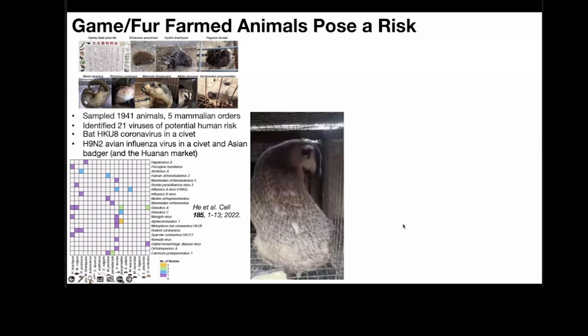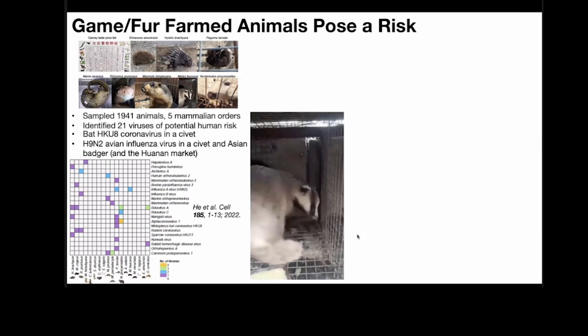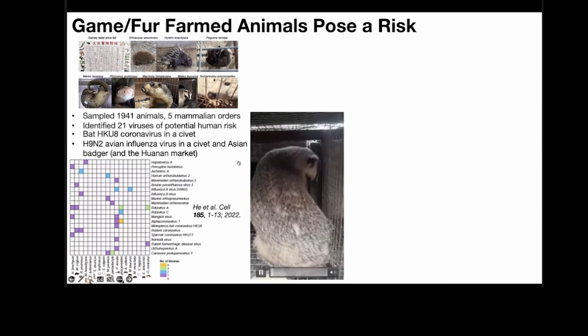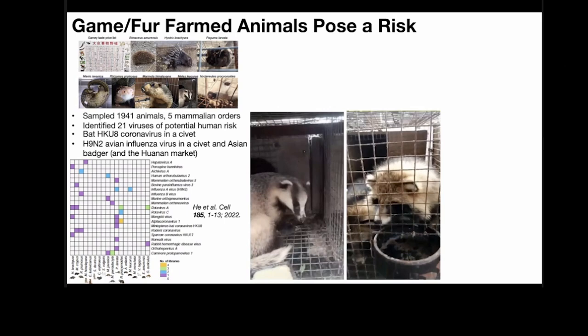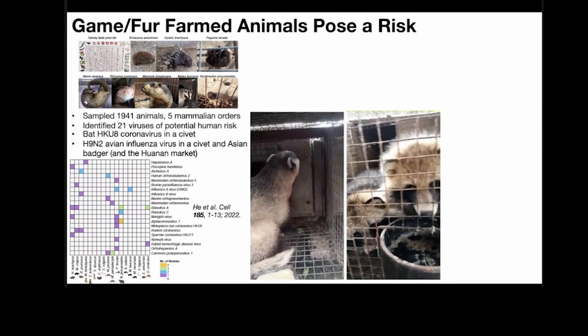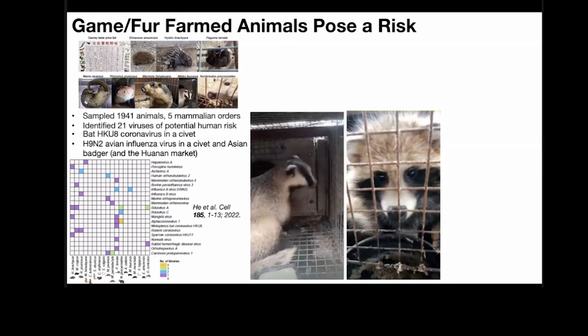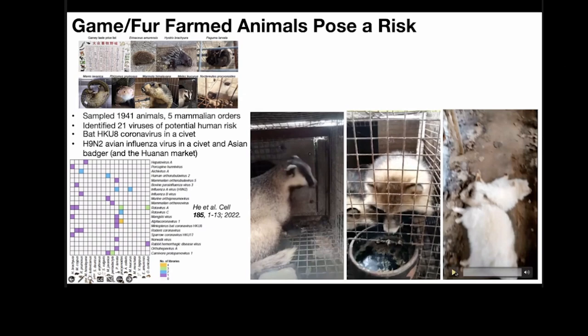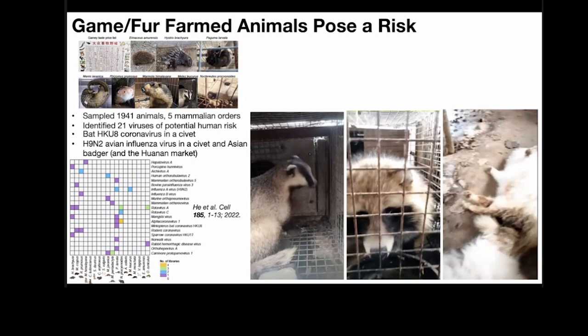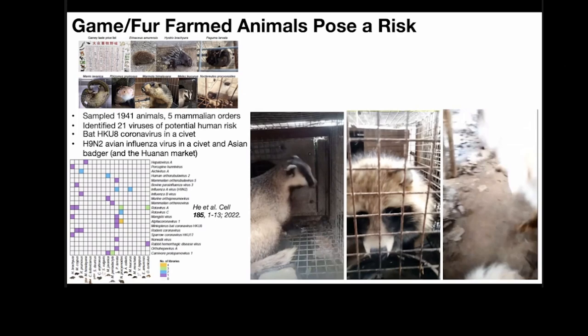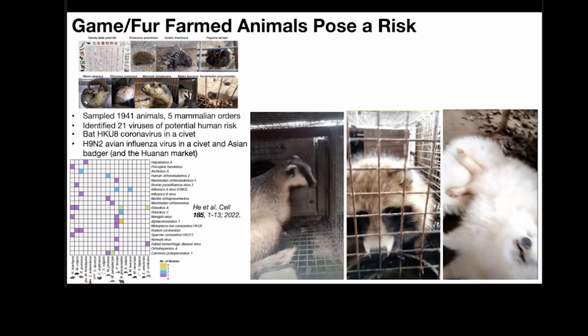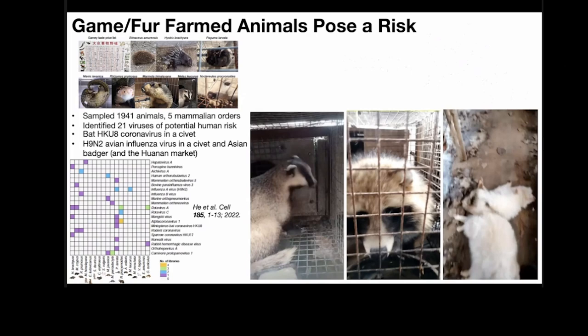These include things like HKU8 coronavirus in a civet, and H9N2 avian flu virus in a civet and a badger. In fact, H9N2 avian flu virus was also in the Huanan market metagenomic samples — so they had avian flu in that market as well. Here's an Asian badger — one of the animals we sampled — and you can see it's clearly unwell: this animal has H9N2 avian flu. And here's a raccoon dog with a cough. Be very afraid — this is where you get pandemics. Another clip shows severe enteric disease. People are holding these animals with their hands — this is the risk, the human-animal interface that will cause pandemics.